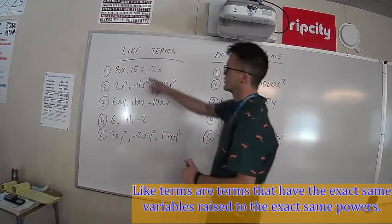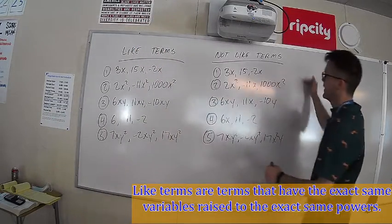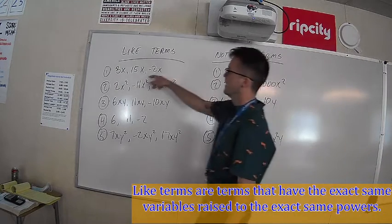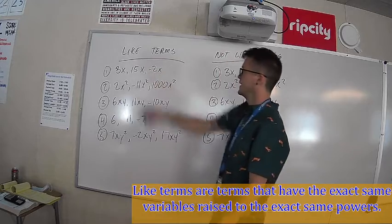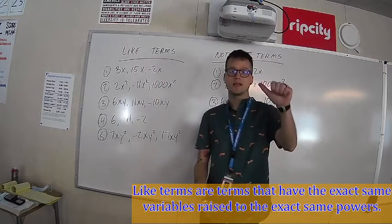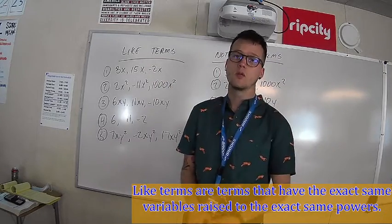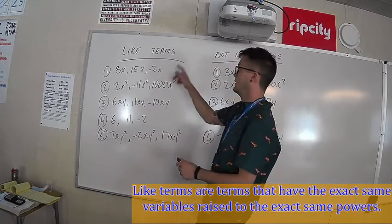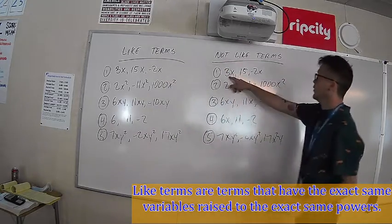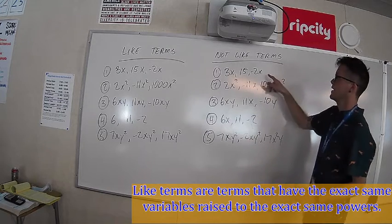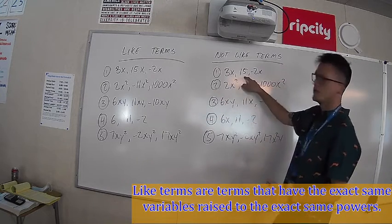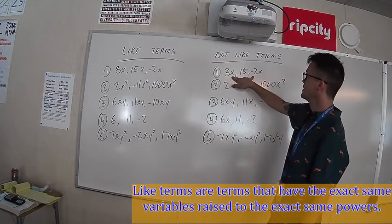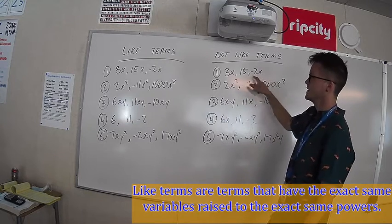Behind me I have a chart — these are five different sets of like terms, and here are five different sets of terms that are not alike. Let's examine these. The first set: 3x, 15x, negative 2x — they all have the exact same variable, x, raised to the same exponent, which is one. Over here, 3x, 15, and negative 2x are not like terms because 15 does not have the variable raised to the same power. The two x-terms are like terms, but the whole set is not.